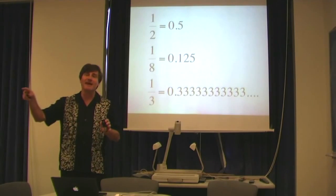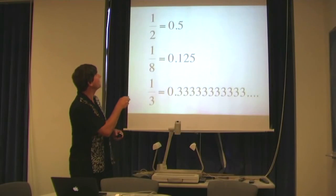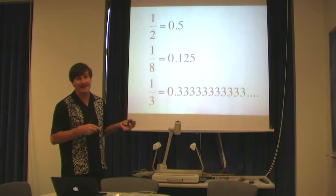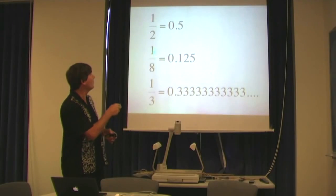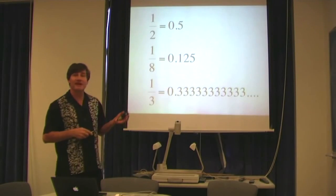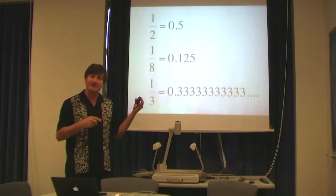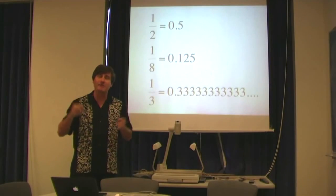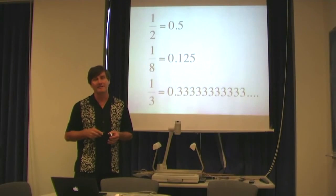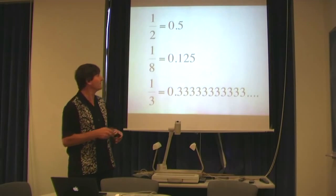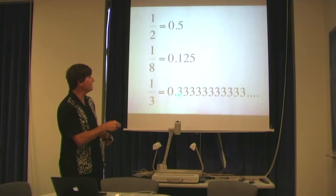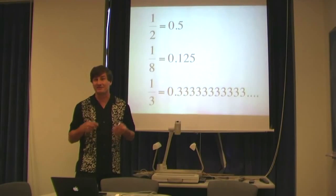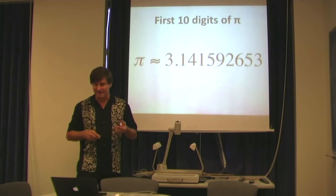Pi doesn't end. So unlike, for example, 1 half, whose decimal representation is given by 0.5, it ends. And unlike 1 eighth, whose representation is 0.125, it too ends, pi doesn't end. Its decimal representation doesn't end. It's infinite. And it doesn't repeat. So, for example, 1 third is given by 0.33333, a never-ending series of threes. It repeats. But pi doesn't repeat.